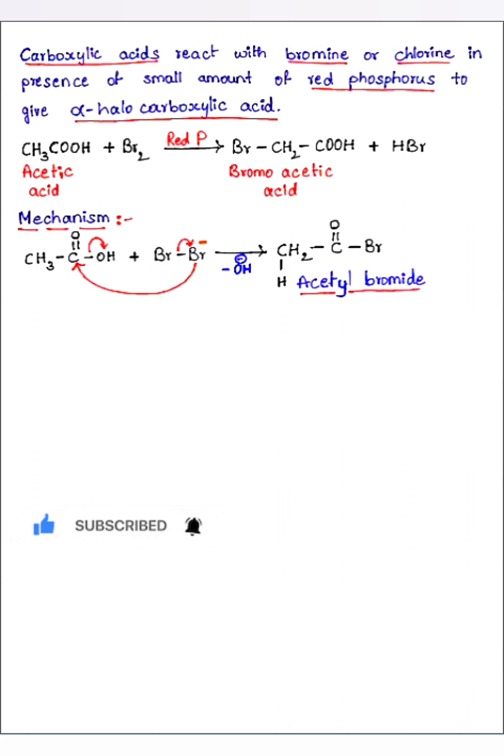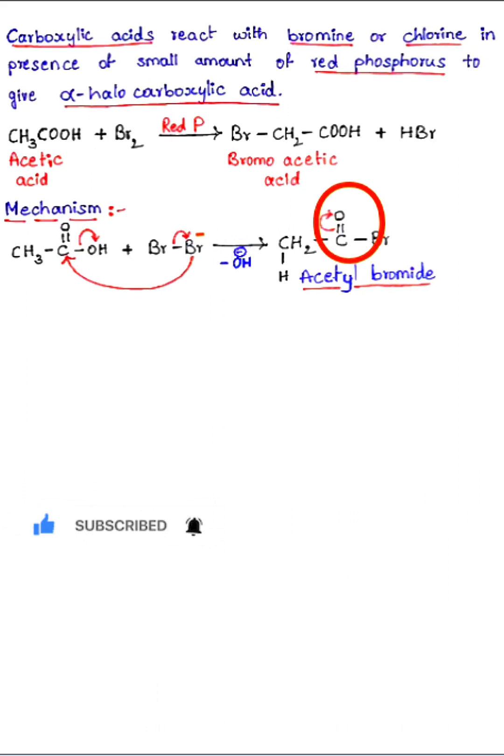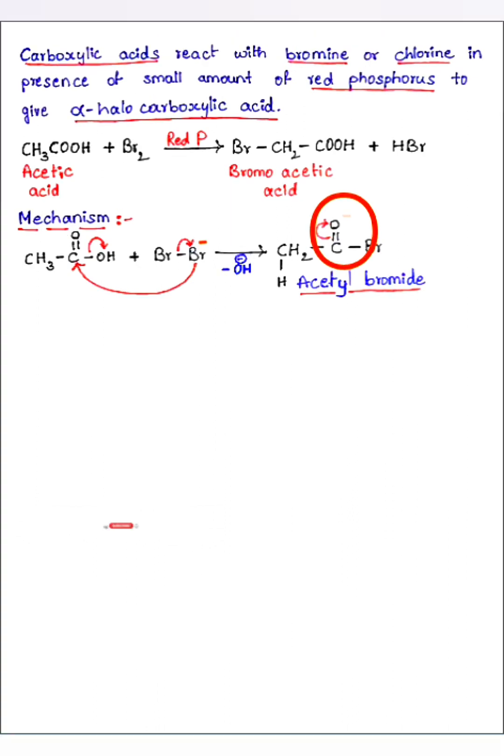Next what I will do, I am doing keto-enol tautomerism. If you remember keto-enol tautomerism you can understand this very easily. Here I am shifting this double bond up, that is I am shifting this pi bond towards up direction. Then here oxygen gets negative charge and this carbon gets positive charge.